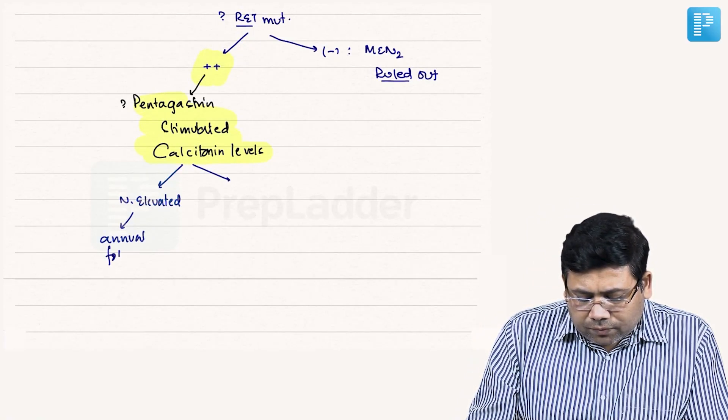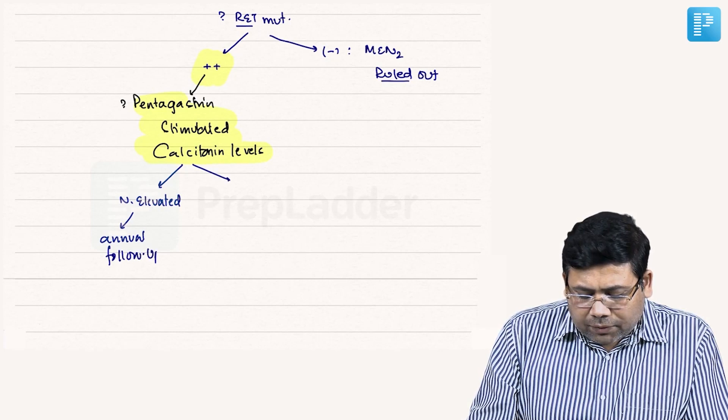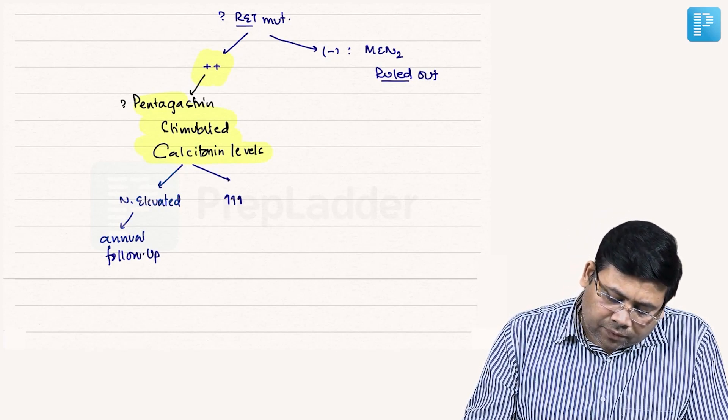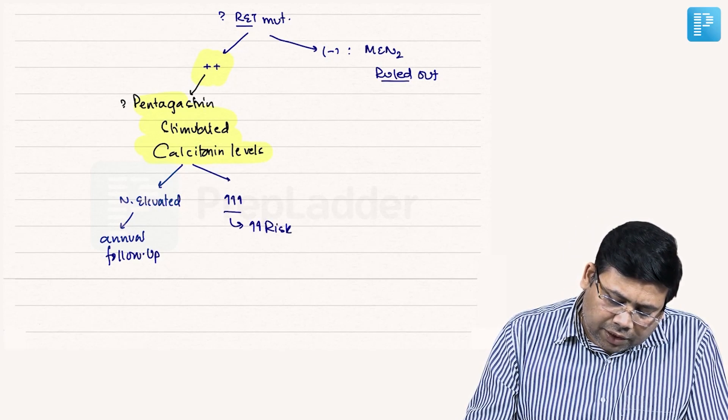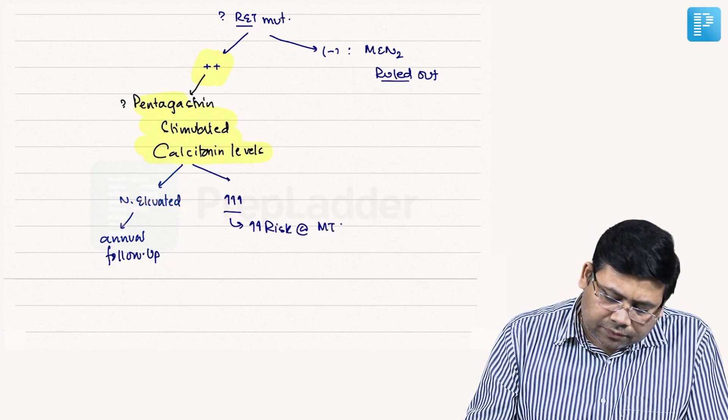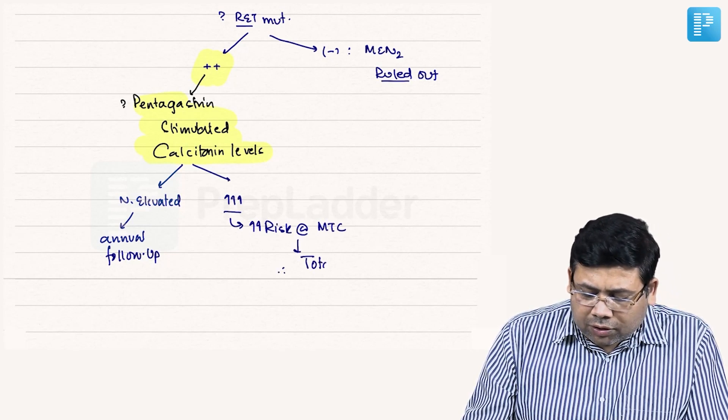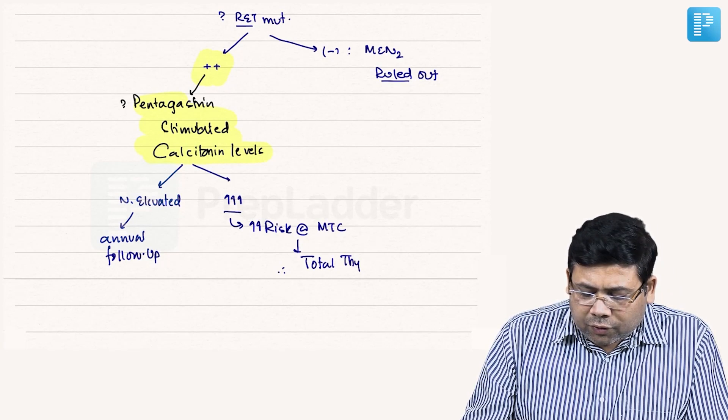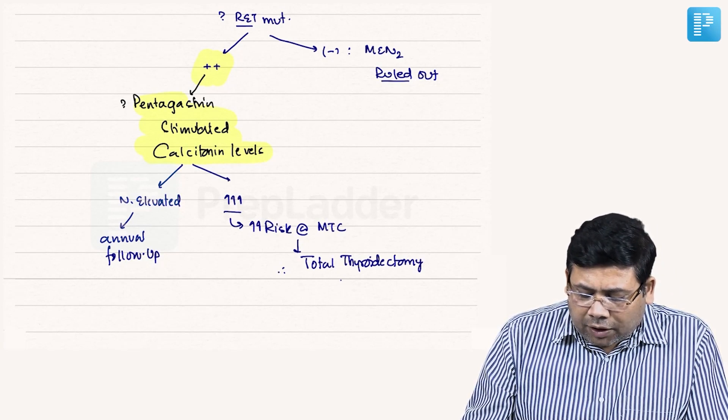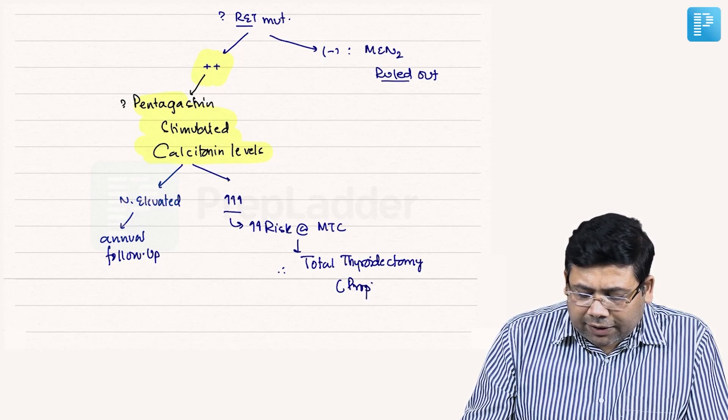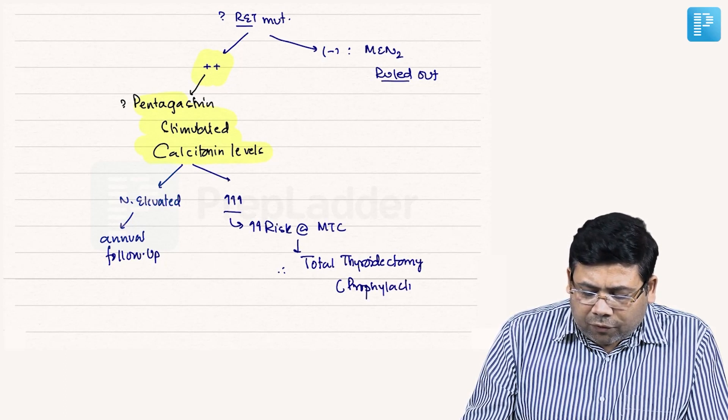If it is found to be elevated, there is increased risk of medullary thyroid cancer. Therefore we need to do a total thyroidectomy - we say prophylactic total thyroidectomy.